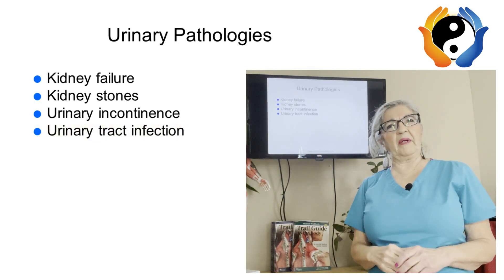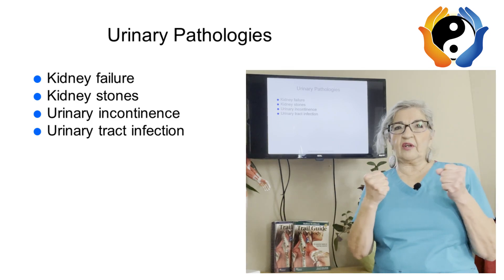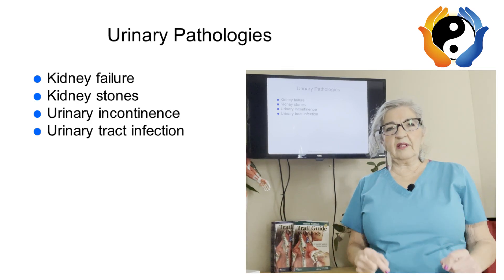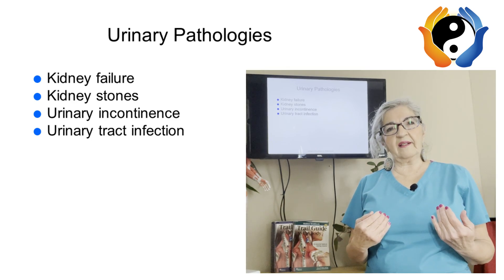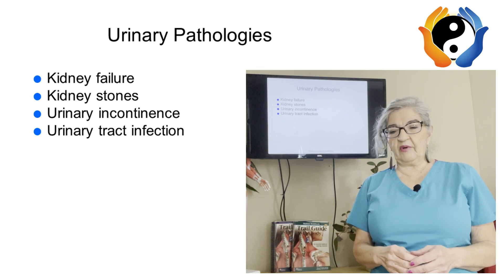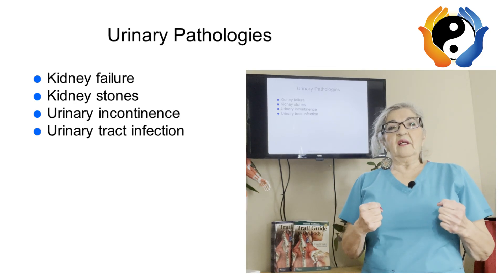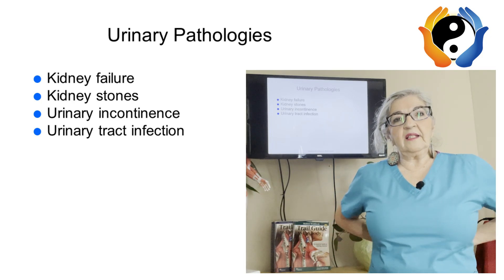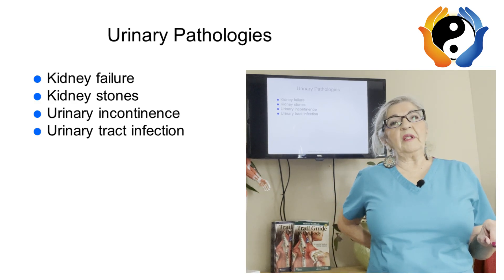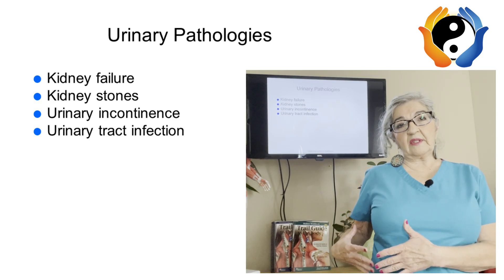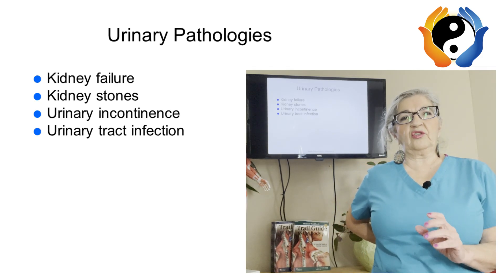I'd like to talk a little bit about the wonders of your urinary system, which is really a marvel. You've got two kidneys which are the size of your fist, two ureters which look like long pencils — they're anywhere from 10 to 12 inches long depending on how long your torso is. Then you have your urinary bladder and your urethra. The right kidney sits a little bit lower than the left kidney due to the liver being on that side — it's the largest organ.